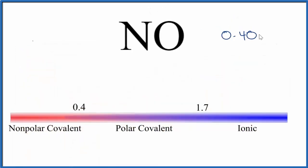So on the scale here, 0.40, that's right here between nonpolar covalent and polar covalent. So NO, nitrogen monoxide, is most certainly a covalent compound. This is Dr. B answering the question whether NO, nitrogen monoxide, is covalent or ionic. It is a covalent compound. Thanks for watching.